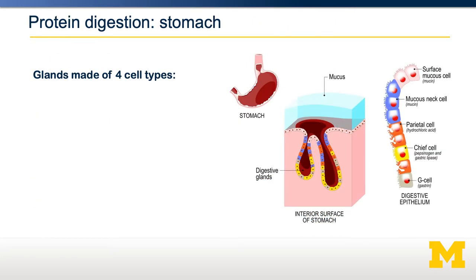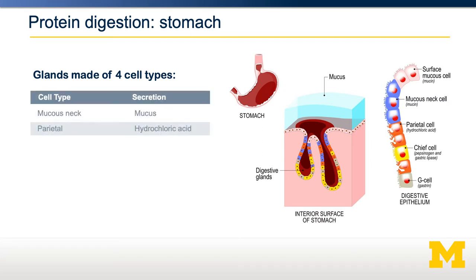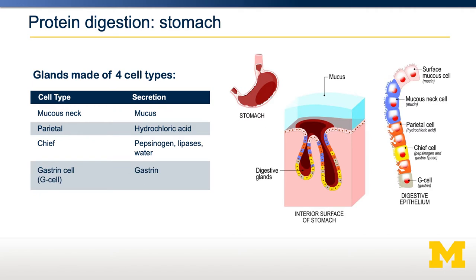Let's start in the stomach. There are four types of cells important for acid secretion that are critical for protein digestion. There are the parietal cells, which secrete stomach acids in the form of hydrochloric acid. Then there are chief cells, which secrete both pepsinogen and some lipases. G cells secrete the hormone gastrin.